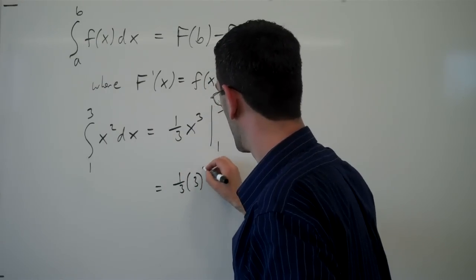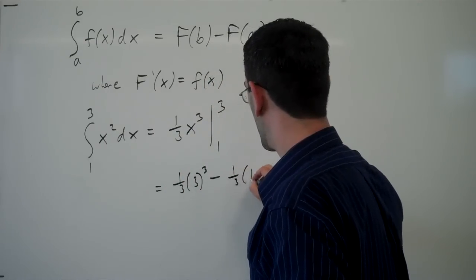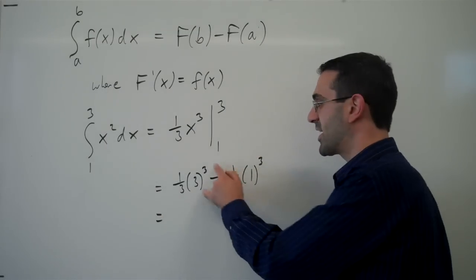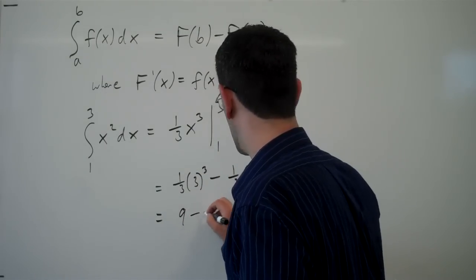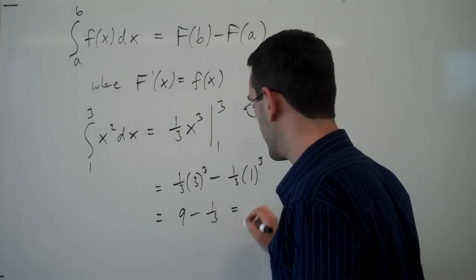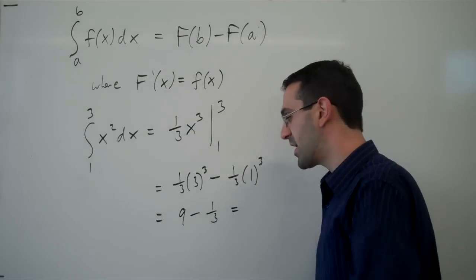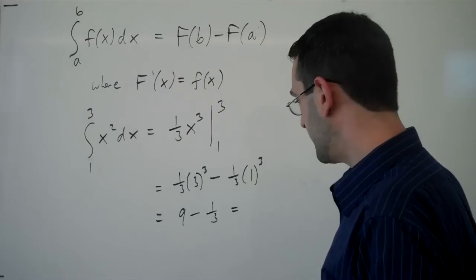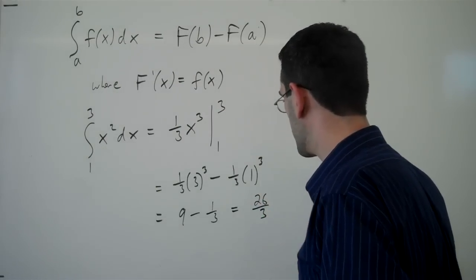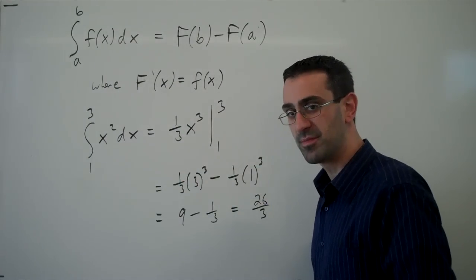And then I'm going to plug in 1, and subtract. So here I've got 27 over 3 is 9. Here I've got 1 cubed is 1, and one third. I've got 9 minus 1 third, or in other words, 26 thirds as the area under this curve.